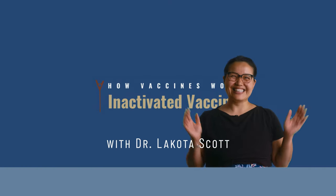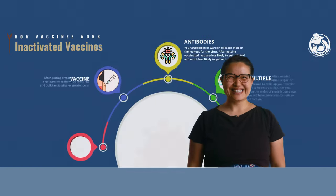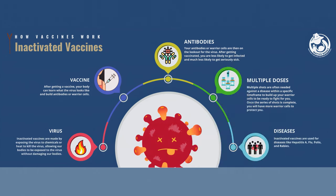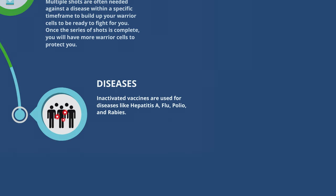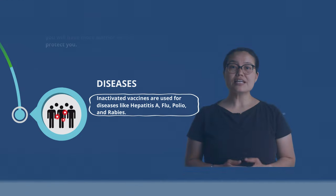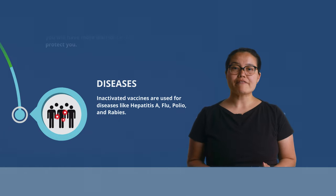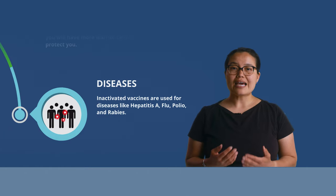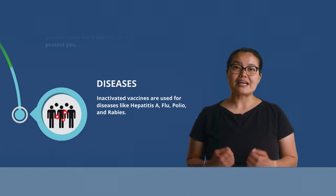Hi, I'm Dr. Scott. Let's learn about inactivated vaccines. Most people have gotten these shots multiple times in their lives, and they're used for diseases like hepatitis A, flu, polio, and rabies. Each of these diseases is caused by a virus, and a virus is a kind of germ that can make us sick.